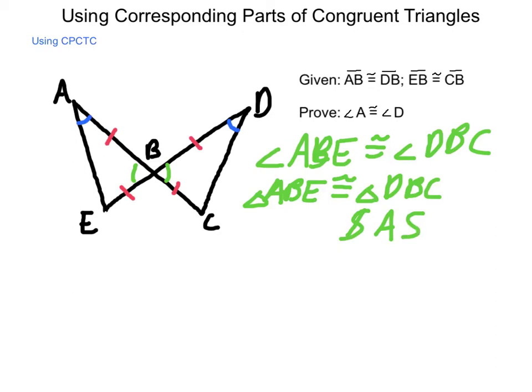Now, since the two triangles are congruent, all corresponding parts would be, that leads us to the fact that angle A is congruent to angle D by corresponding parts of congruent triangles are congruent.